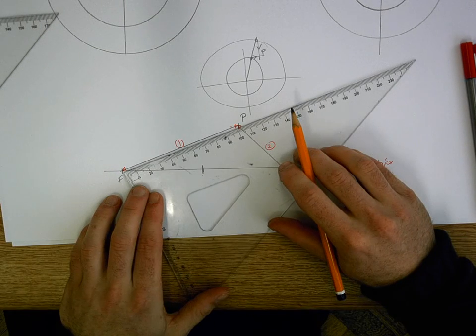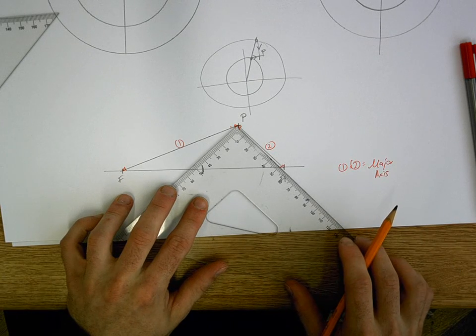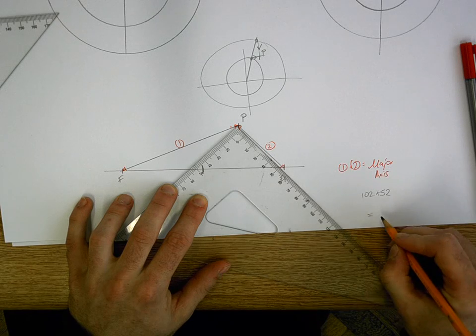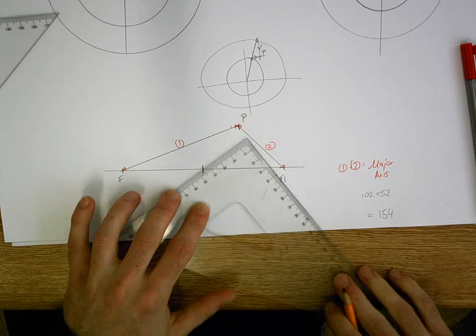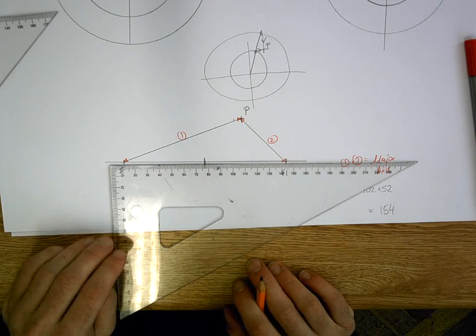So I'll add up what those actually are. The first one is 102, and the second one is 52. So we have 102 plus 52, which gives me 154. That means that my major axis from left to right is going to be 154.